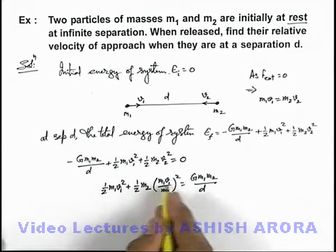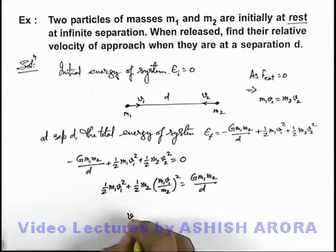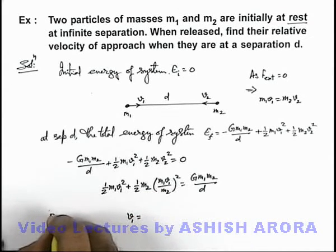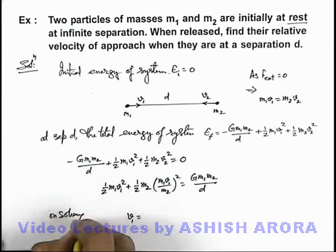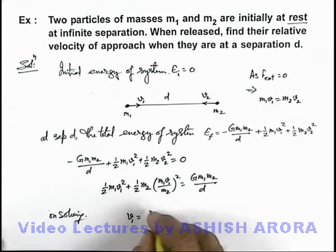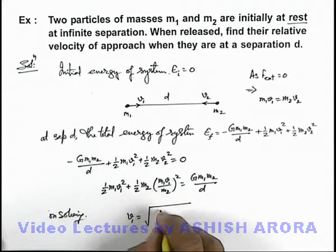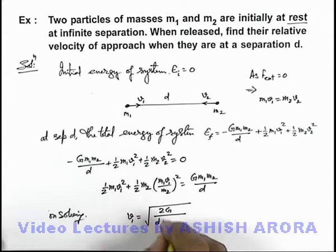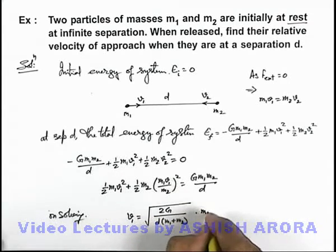On simplifying this expression, we can take v1 common out. On solving, we can say, on solving for v1, we get the value of v1 as root of 2G by d, m1 plus m2 multiplied by m2.